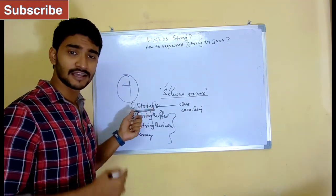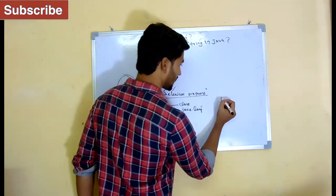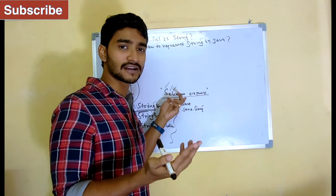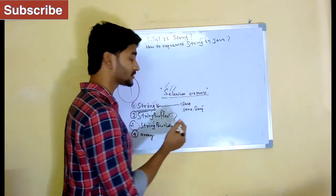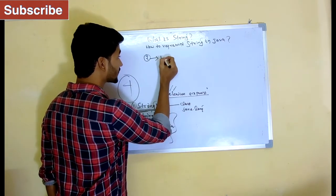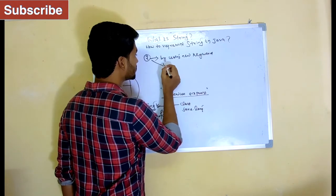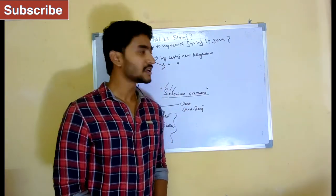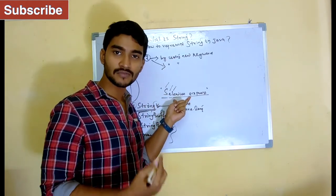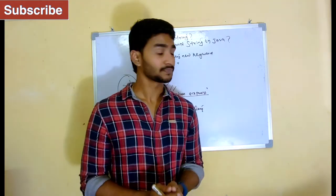The next thing we need to understand about string is: whenever I want to store a string — let's say I want to store the string 'Selenium Express' — if I want to represent this string in Java, how can I do that? How can I create a String object? I can create a String object by using two different ways. The first way is by using the new keyword, and the second way is by using double quotes.